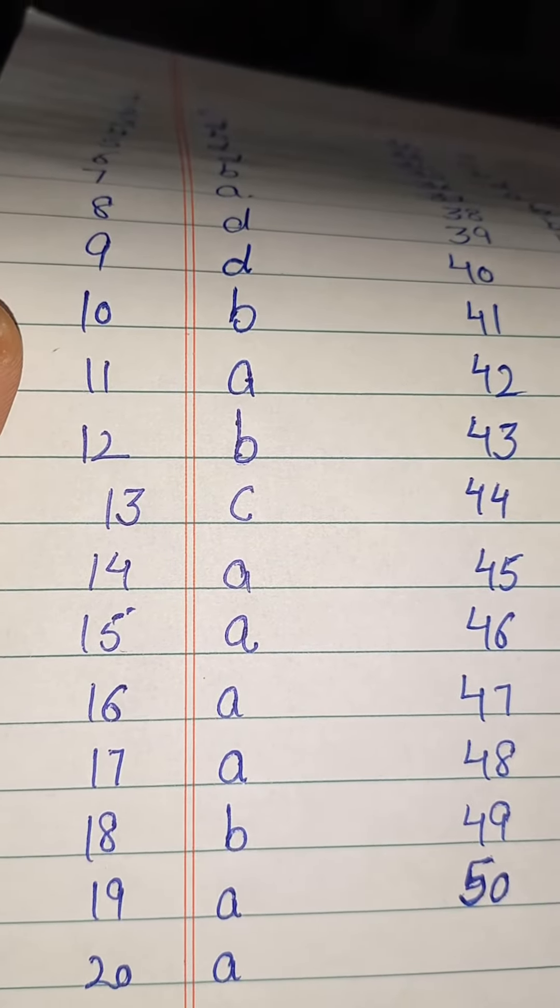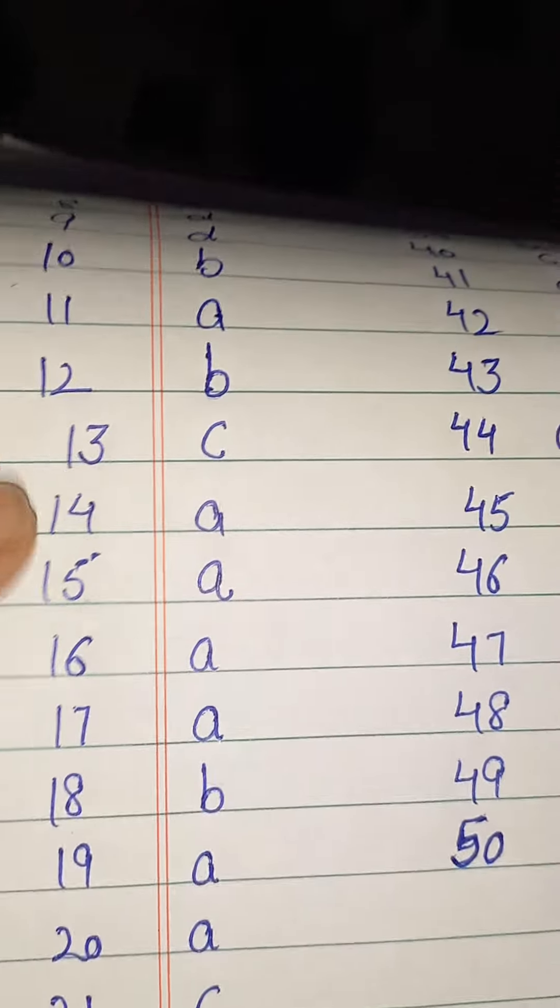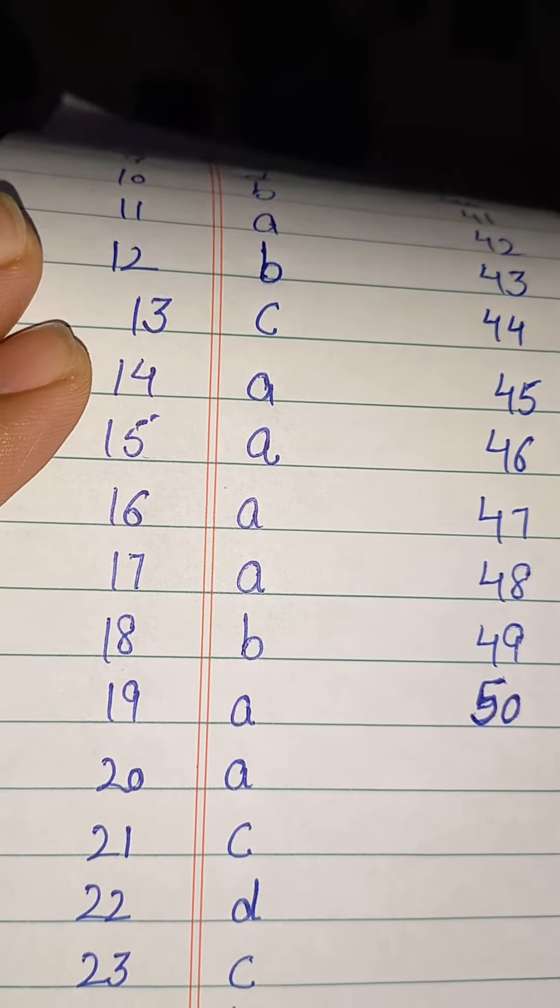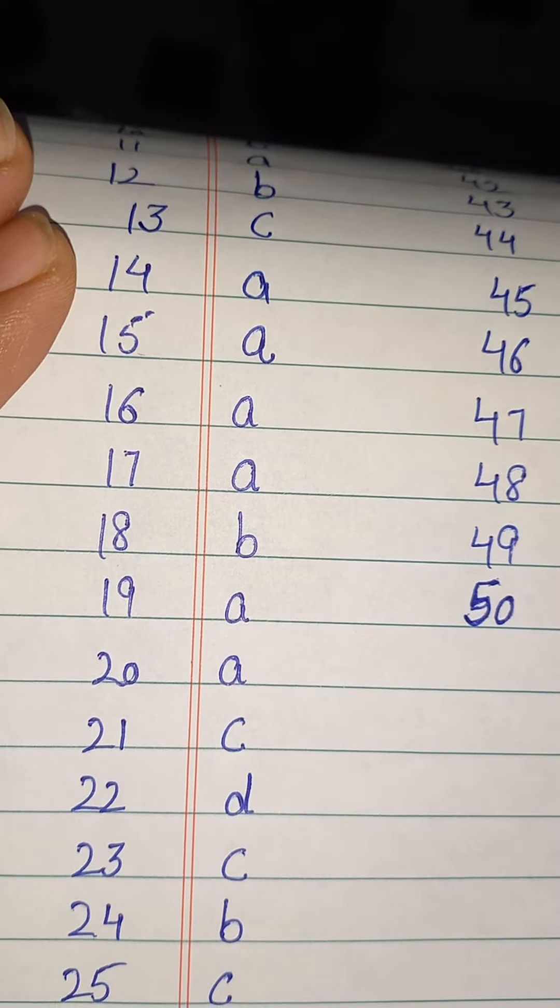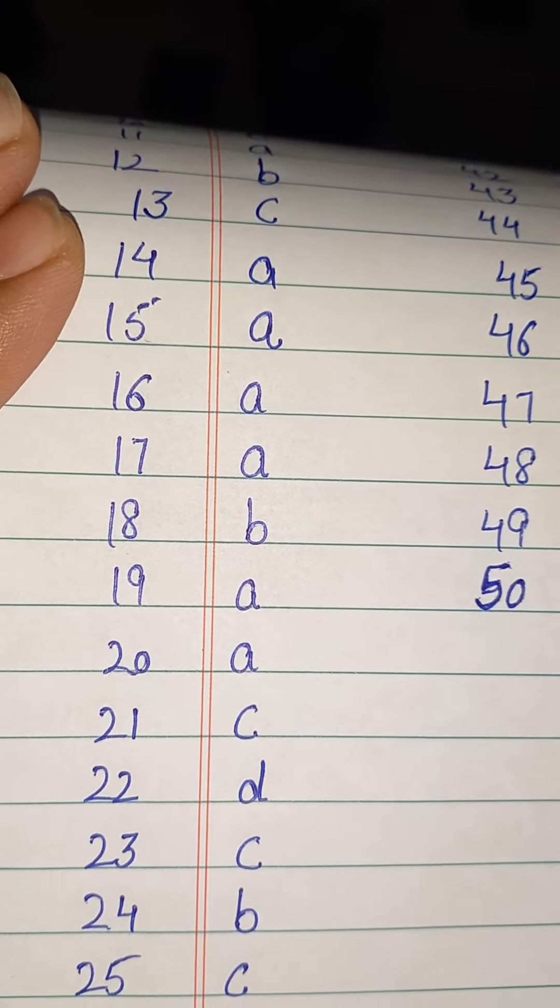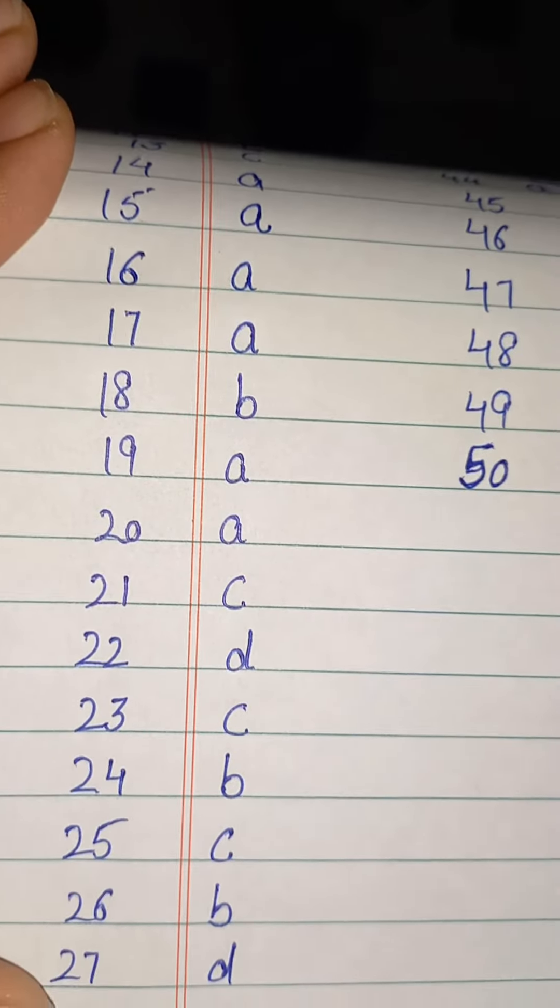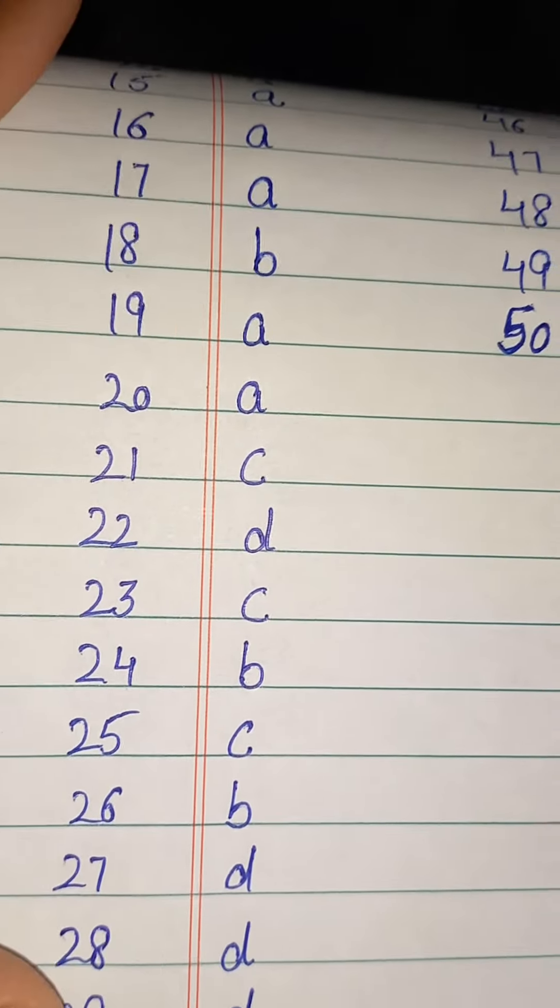Question number 18 B, question number 19, 20 again A. Question number 21 C, question number 22 is the D answer. Question number 23 C, question number 24 B answer, 25 C.